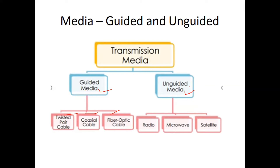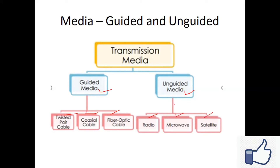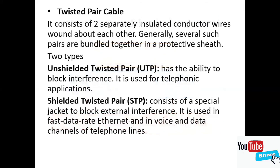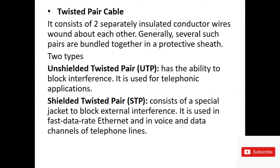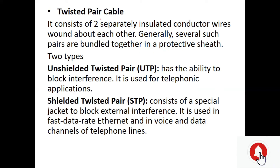For unguided media, signals travel through the air — that is wireless media. Coming to twisted pair cable: it consists of two separately insulated conductor wires wound about each other. Generally, several such pairs are bundled together in a protective sheet, forming the twisted pair cable.